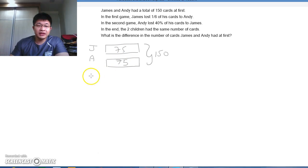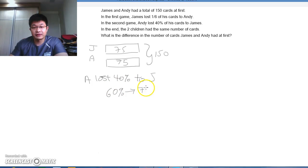Now, this is what happens after the second game. So during the second game, we must know that during the second game, A lost 40% to James. So, this would mean that this 75 actually stands for 60%. So we work backwards. So 60% would therefore be 75 cards.